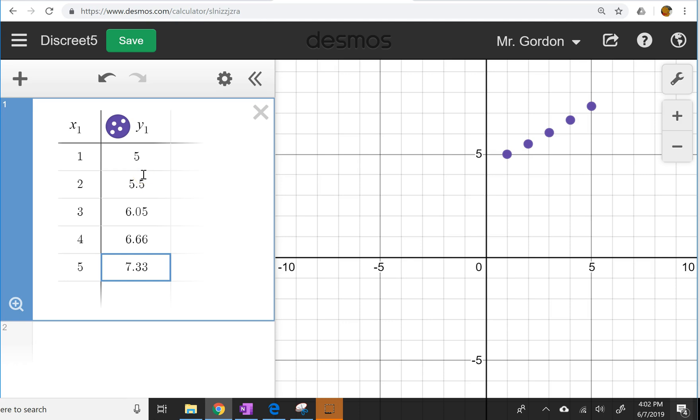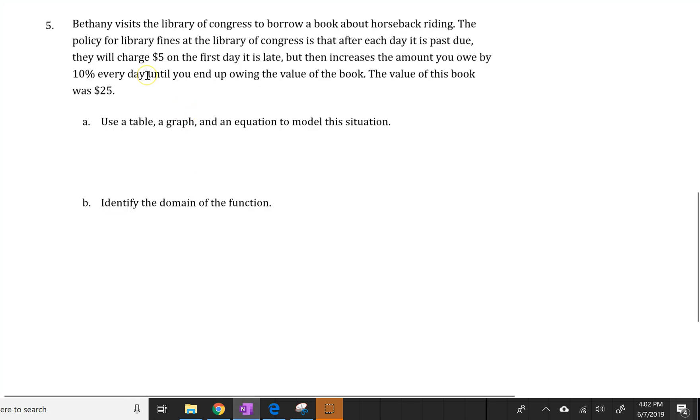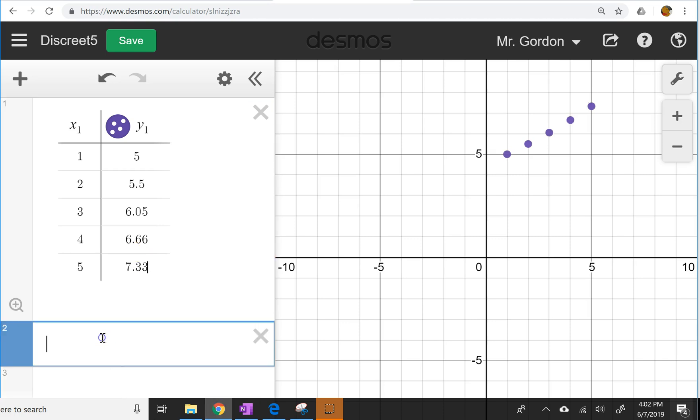So we can see that by day five, she is going to be owing $7.33, and it's continuing to increase at 10% every day, up until the value of the book, which is twenty-five dollars. So we can use an equation, we can write an equation to model the situation to see if it fits our graph.